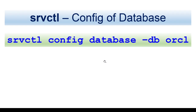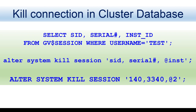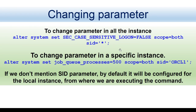If you want to see the config of your database, you will use SRVCTL config database with -db unique database name. To kill a connection in the cluster database, you have to specify ALTER SYSTEM KILL SESSION with the SID, serial number, and the instance where the connection is. You get the instance ID from GV$session.